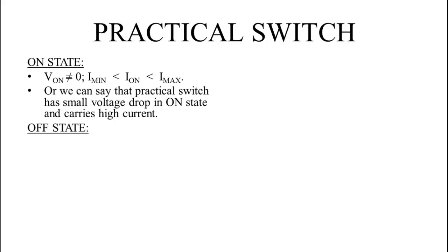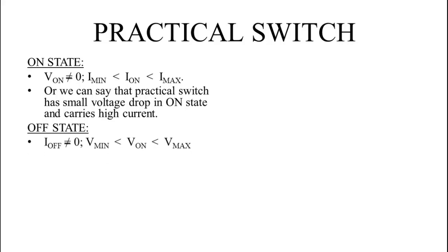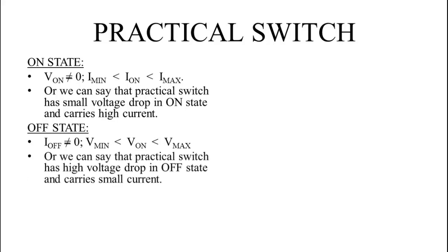During the off state, a very small current flows through the switch, so I_off is not equal to zero. It is able to withstand voltage within limits V_min and V_max during off state. We can say that a practical switch has high voltage drop in the off state and carries a small current.